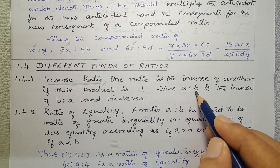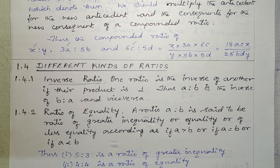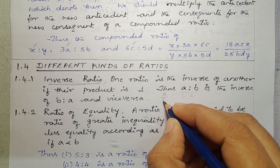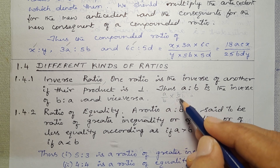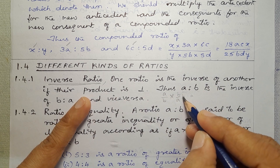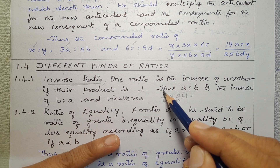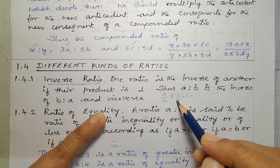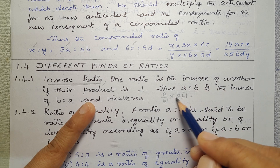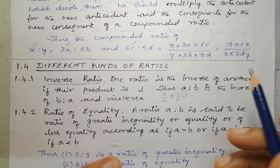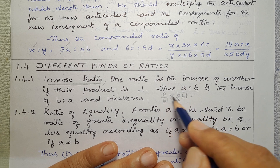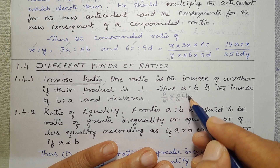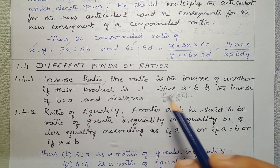So A is to B is one ratio. Suppose B by A — then the inverse ratio. One ratio is the inverse of the other if their product is 1. So the product (multiplication) equals 1, and vice versa.